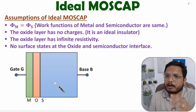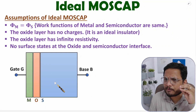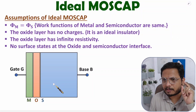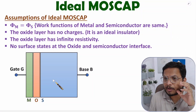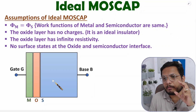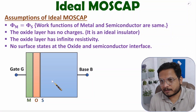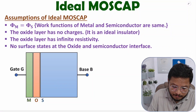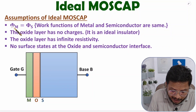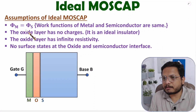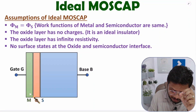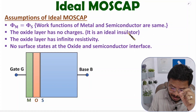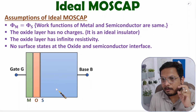Now, to have an ideal MOS cap, there are a few assumptions you need to understand first. Based on those assumptions, you can understand the energy band diagram of the ideal MOS cap. The first assumption is ΦM equals ΦS — meaning the work function of metal and the work function of semiconductor are equal.